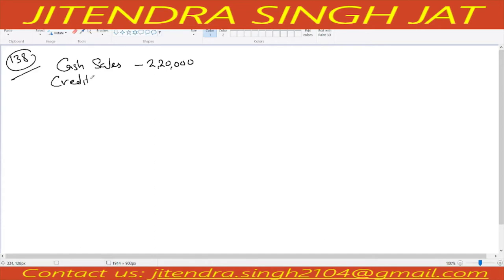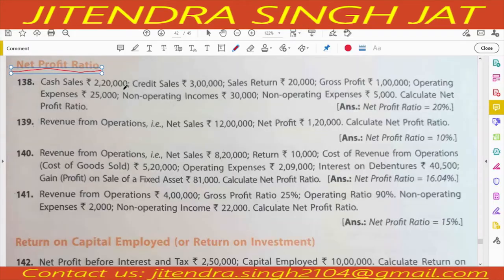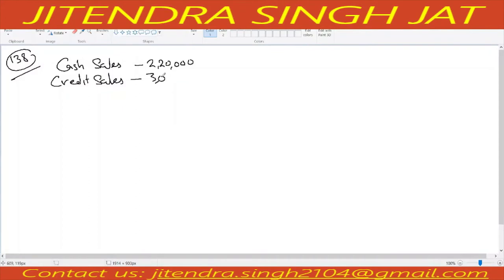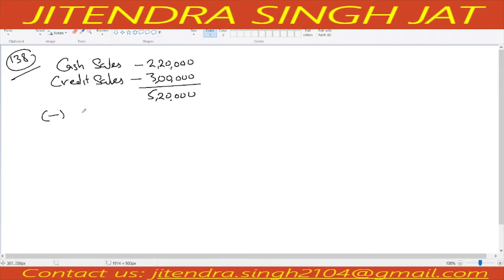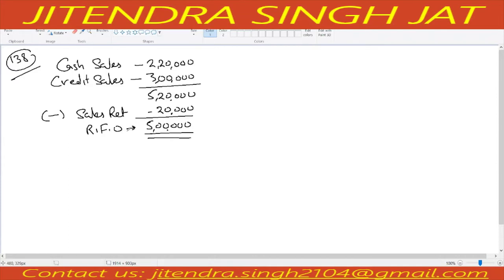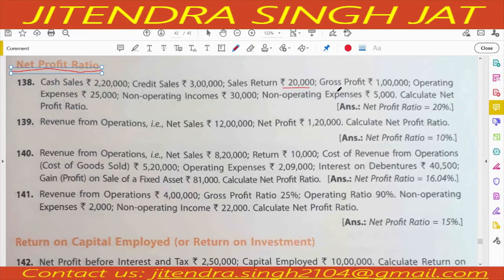Credit sales is given 3 lakh. So 3 plus 2 is 5 lakh 20,000. Sales return is given 20,000, so less sales return 20,000. 5 lakh 20 minus 20 is equal to 5 lakh. So your revenue from operations, or net sales, is computed as 5 lakh rupees. Gross profit is given 1 lakh and operating expenses are given 25,000.